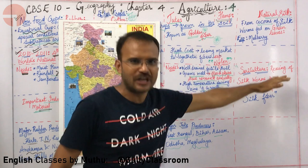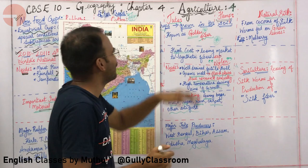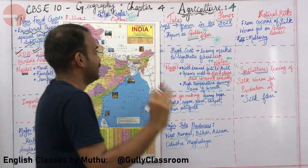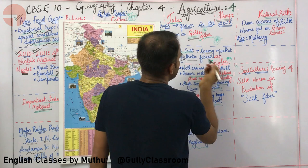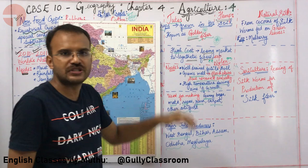Setting hemp aside, let us study jute, which is otherwise called the Golden Fiber. Jute is slowly losing its market to synthetic fibers, especially nylon, due to its high cost.